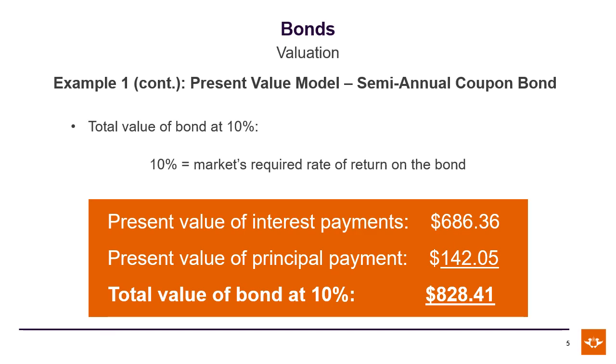Putting all of this together, we get the total value of our bond at 10% is $828.41.